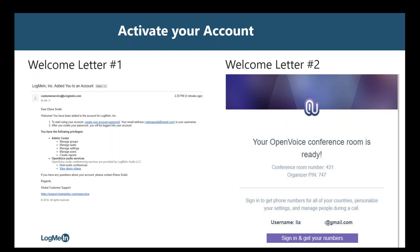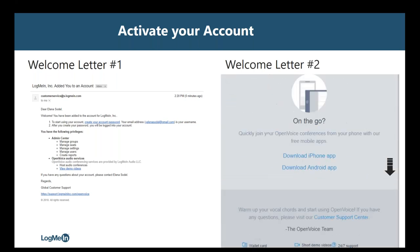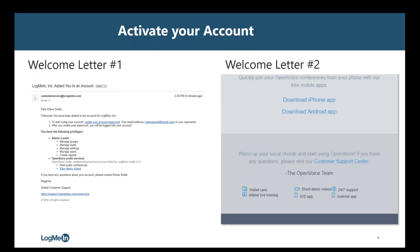Your second welcome email includes your specific conference room information, including your unique conference room number and your organizer PIN. Once you receive this email, you can log into your account, locate your phone numbers, and start hosting calls immediately. Also included in this email is a link to the Open Voice organizer website where you'll find the full list of international access numbers available on your account, in addition to direct links for the Outlook plugin and our mobile apps. At the bottom of the email, you will find quick links to a wallet card and our support and training resources.